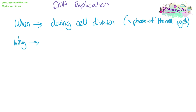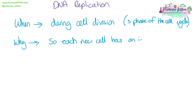Why does DNA replication need to happen? If we didn't replicate the DNA, then we wouldn't have two sets of DNA to go into the two new cells. We also need both new cells after cell division to have identical copies of the genome in their nucleus.